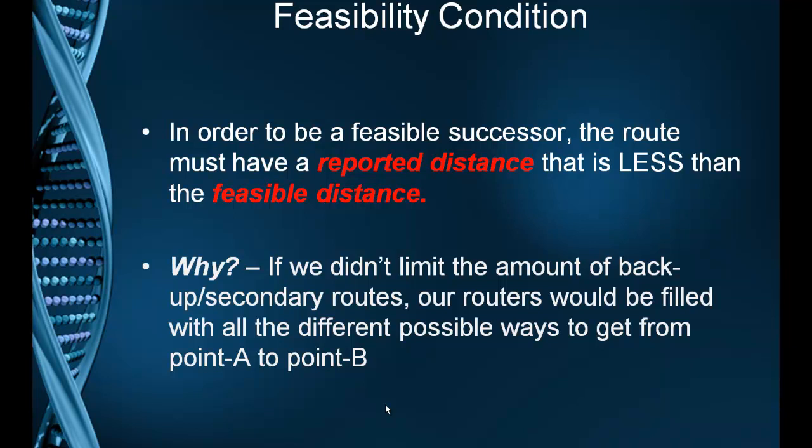Your first question might be: why does there have to be a condition? Why don't we have all the possible backup routes in our router? Well, one reason is it would create routing loops, which are bad. Second, it would fill up our routers with so many secondary routes that are kind of worthless, requiring a lot more processing power and memory, which would slow our network down considerably. So between routing loops and the slowness factor, we only want good backup routes.